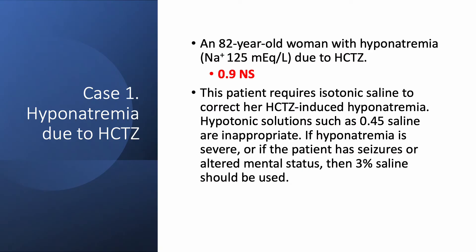The correct answer is 0.9% normal saline. To correct hyponatremia in a patient with hydrochlorothiazide-induced hyponatremia, you give 0.9% normal saline. You are not going to give half normal saline or D5W because those are hypotonic solutions. Lactated Ringer is a little bit hypotonic, so it is also inappropriate. Now if the hyponatremia is severe, or if it does not correct with 0.9% normal saline, or if the patient has symptoms, you are going to use 3% saline first and then 0.9% saline afterwards.